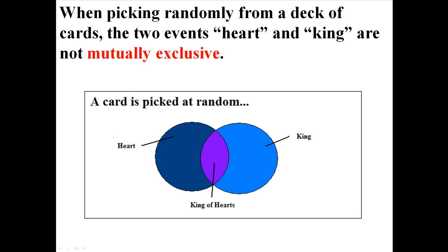Now imagine if you randomly picked a card from a deck of cards, and there were two events: heart and king. Heart and king are not mutually exclusive, because you can get something that's a heart, or you can get something that's a king, but you can also get something that is both a king and a heart, which is a king of hearts. So heads and tails are mutually exclusive events, while heart and king are not mutually exclusive events.